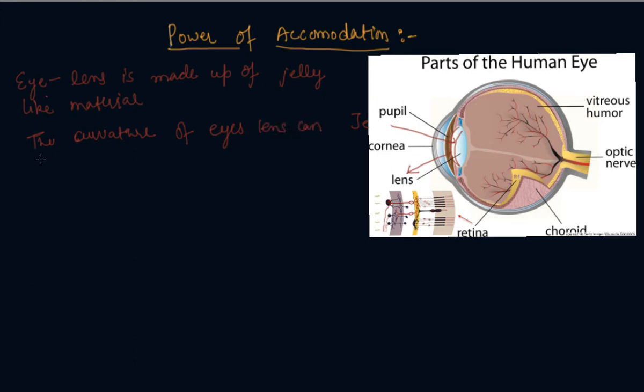It can be modified to some extent by ciliary muscles. So the ciliary muscles here, these muscles are called as ciliary muscles. So these muscles can change the curvature of the eye lens.